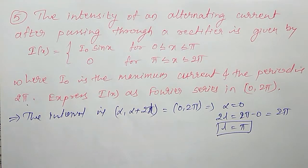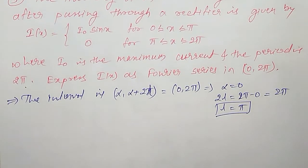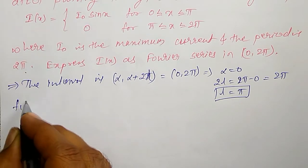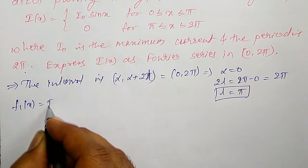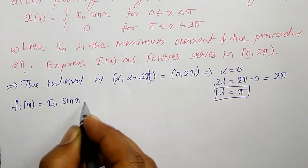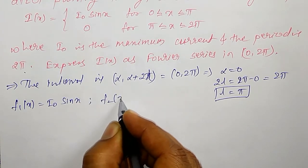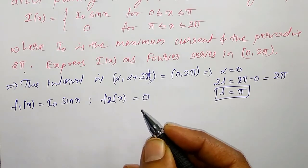Now I have to check whether the function is even or odd so that the Fourier coefficients become easy to find. Let F₁(x) = I₀ sin x and F₂(x) = 0.